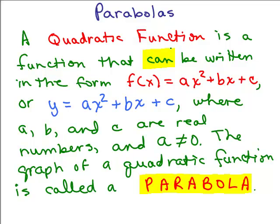So a quadratic function is a function that can be written in the form f(x) equals ax squared plus bx plus c, or you could write that as y equals ax squared plus bx plus c, where the coefficients a, b, and c are real numbers and a is not equal to zero. Now, when you graph a quadratic function, you get what's called a parabola.